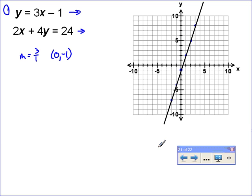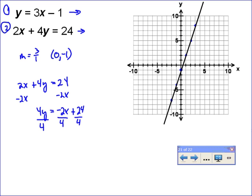Now I want to find the other line, so I've got to do line two here. I'm going to have to do some solving on that one. I want to solve it for y so I can use slope intercept, so subtract 2x and you get 4y equals negative 2x plus 24. Divide everything through by 4 and you've got y equals negative 1 half x plus 6.